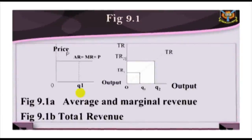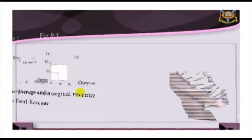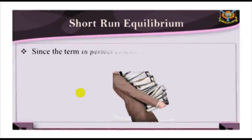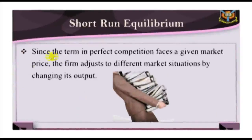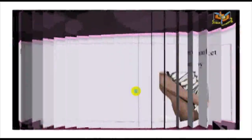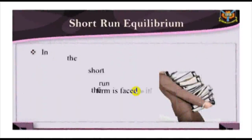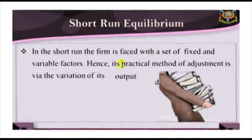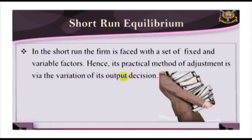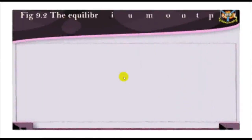Short-run Equilibrium. Since the firm in perfect competition faces a given market price, the firm adjusts to different market situations by changing its output. But in the short run, the firm is faced with a set of fixed and variable factors. Hence, its practical method of adjustment is via the variation of its output decision. A perfectly competitive firm, like any profit-maximizing firm, will seek to produce at the point where marginal revenue equals marginal cost.